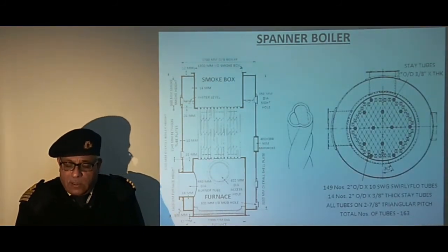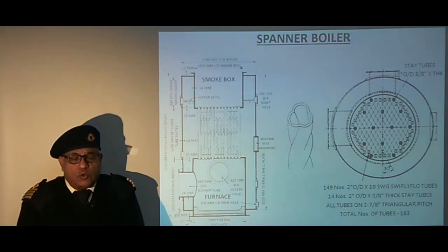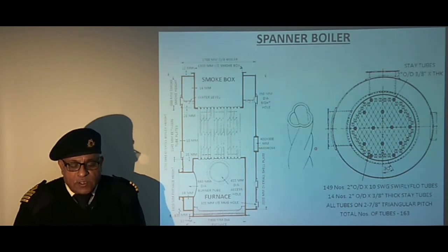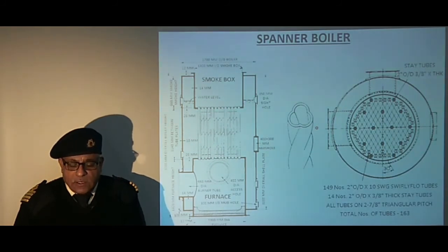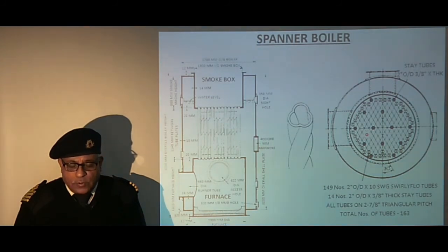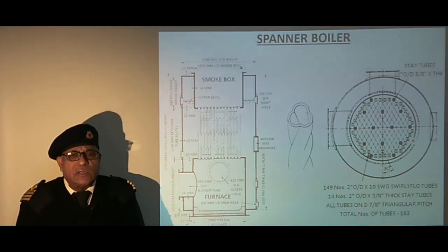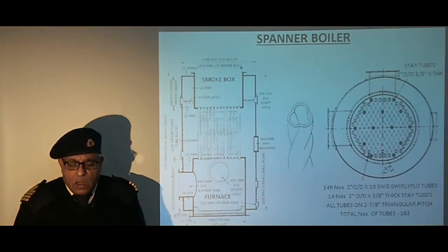Vertical smoke tubes are of a special design called swirly flow tubes, which have a special twist along most of the length but have plain tube ends. There are 149 two-inch OD plain swirly flow tubes and 14 two-inch OD stay tubes. The stay tubes are used to support the tube plate to prevent buckling, and they are attached in the tube plate at a triangular pitch of 2 and 7/8 inches.